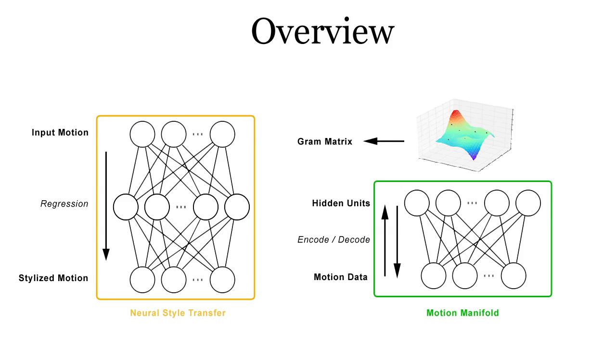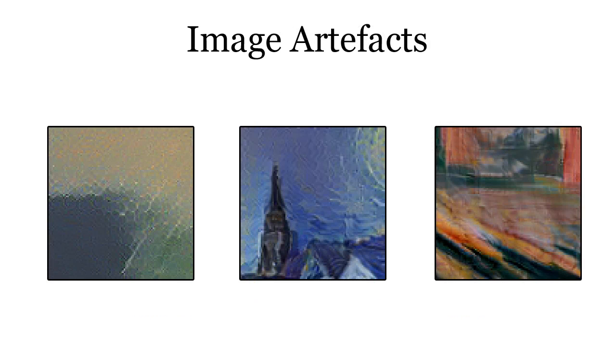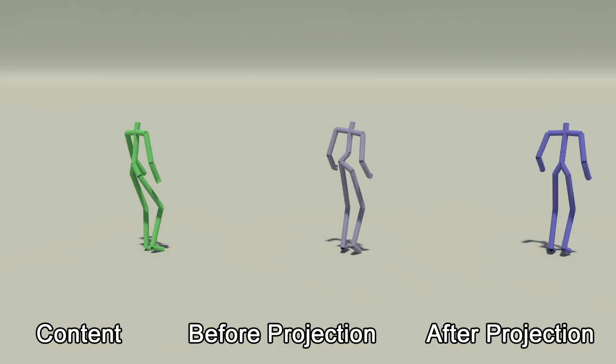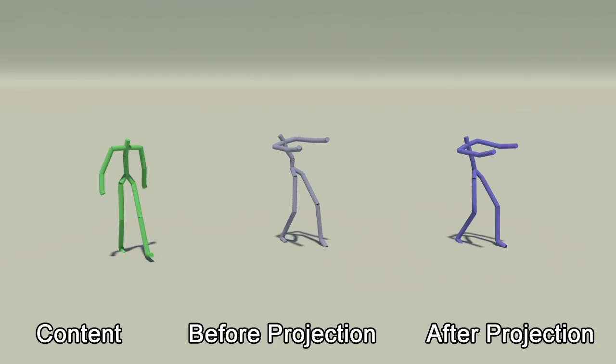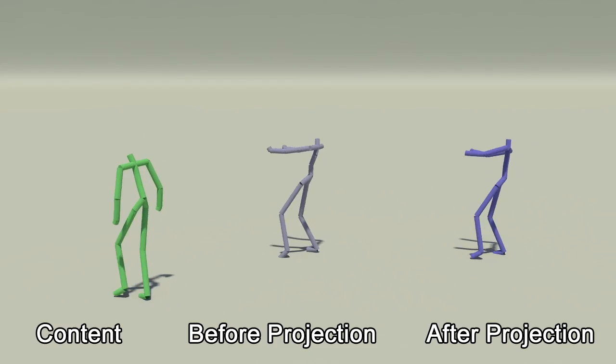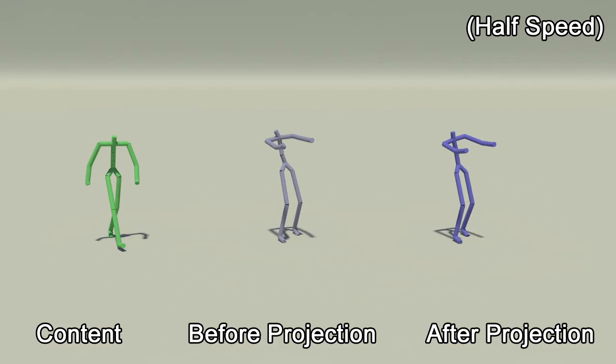After training, the network is capable of performing neural style transfer. While some artifacts and noise are acceptable in synthetic images, this is unacceptable in motion data. We therefore add an additional step. We project the output motion back onto the previously used motion manifold. This ensures the final motion produced is always of high quality.